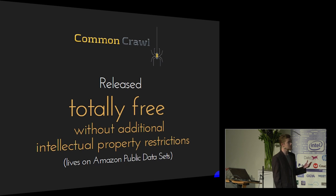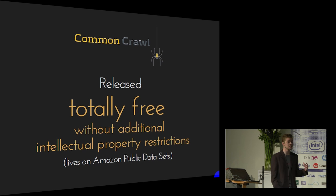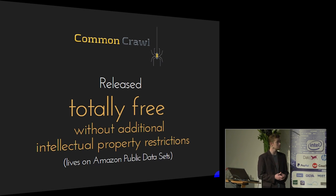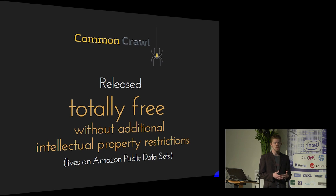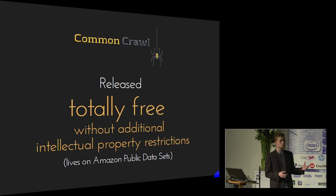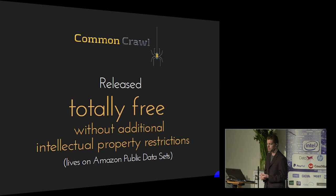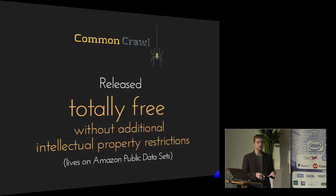All of this actually lives on Amazon public datasets. There are two advantages: first, they give us the hosting for free, which is an amazing advantage. Second, if you're a volunteer or interested student, you can spin up a cluster on Amazon EC2 with all the data sitting right next to your compute infrastructure. If you're a company or university with your own hardware, you can also download it completely free to your local cluster.